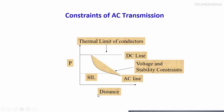This graph shows the relationship between distance and power transfer capability. As distance increases in AC transmission, issues of voltage and stability arise and the power handling capacity of the AC line reduces. That is not the case with DC transmission, which is independent of distance. There are HVDC links transmitting power over 3000 km — the longest link in China transmits over 3000 km using 1200 kV DC.